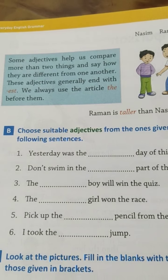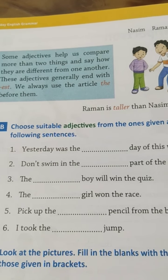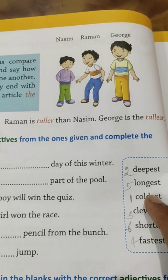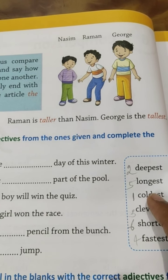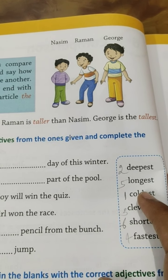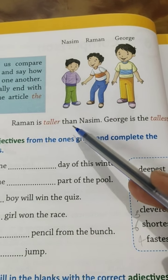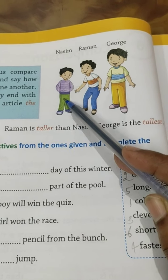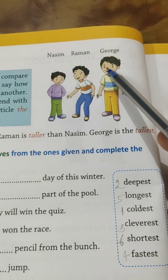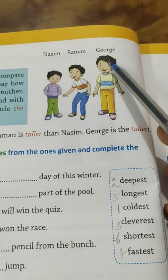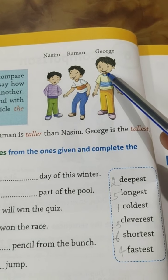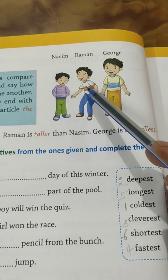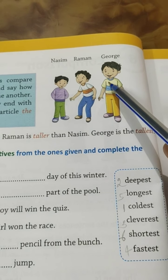We always use the article 'the' before them. See — Nassim, Raman, and George. Raman is taller than Nassim, but George is the tallest. Among these three, George is the tallest boy, but Raman is taller than Nassim.